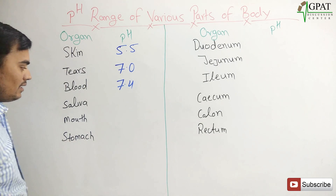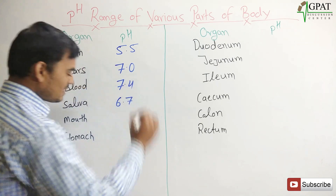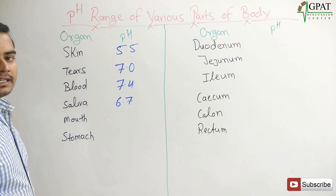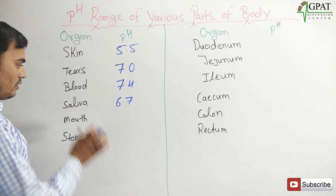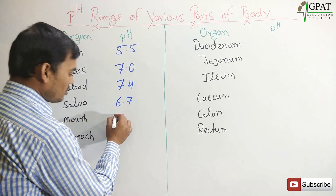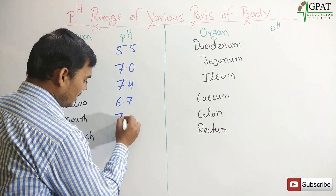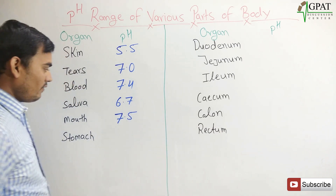Saliva: the pH of saliva is slightly acidic, 6.7. Next, mouth: the pH range of the mouth is 7.5.